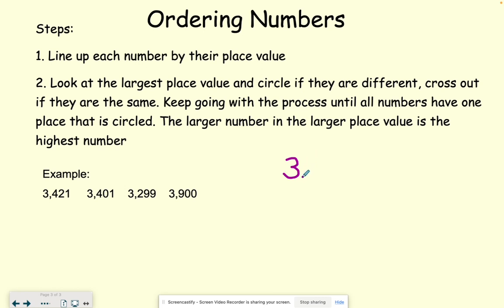Three thousand, four hundred, twenty-one. And then we have three thousand, four hundred, one. And then we have three thousand, two hundred, ninety-nine.